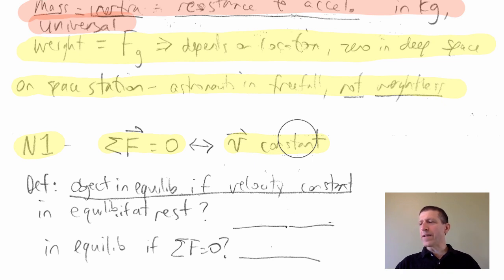One thing we'll be talking about a lot is equilibrium and what that means. The definition of equilibrium is simply if the velocity is constant, an object must be in equilibrium. In other words, the net force on it is zero.